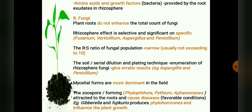Examples of stimulated fungal genera include Fusarium, Penicillium, Aspergillus, and Penicillium. The RS ratio of the fungal population is believed to be narrow in most plants, usually not exceeding 10. The serial dilution and plating technique used for enumeration of rhizosphere fungi may often give erratic, unpredictable results, as most spore formers produce abundant colonies in culture media, giving a wrong picture or wrong estimation — for example, Aspergillus and Penicillium.